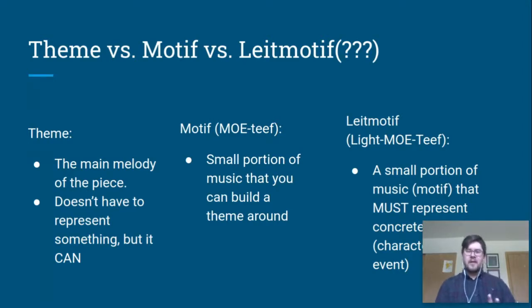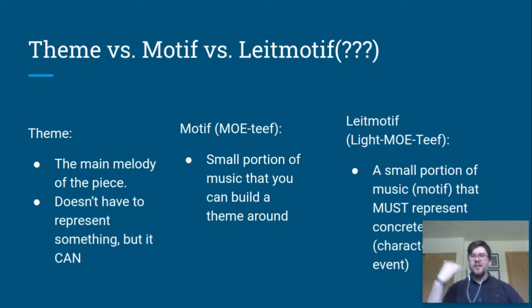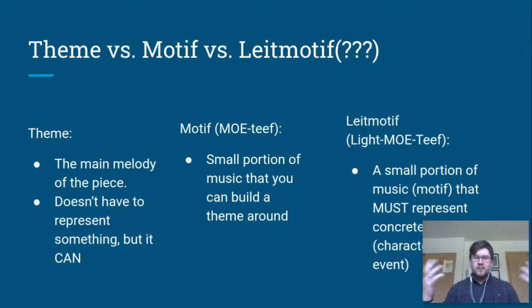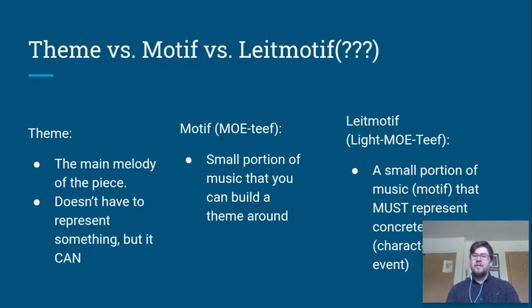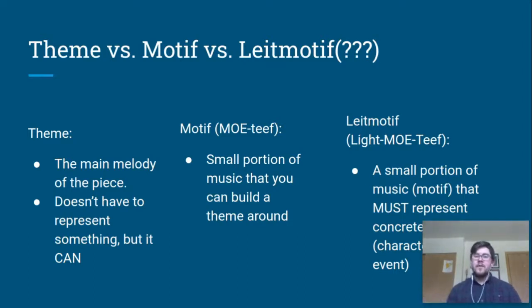A theme is the most basic one. A theme is the main melody of a piece. It doesn't have to represent something, but it can. A good way to think about this is just theme music — the Star Wars opening theme that plays while the credits are rolling. All TV shows have some form of a theme song. It just kind of brings about, hey, this is the show, this is the movie, and we're going to get started. It doesn't have to represent anything. A motif is a small portion of music that you can build a theme around. It can be a hook, a small little idea that without it you wouldn't get the whole theme. Mostly it's the thing that gets stuck in your head when you think of a certain melody.